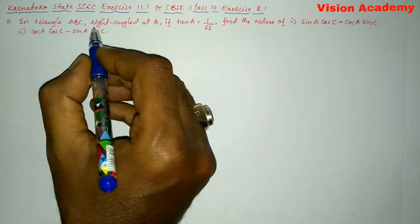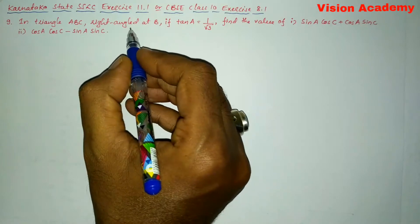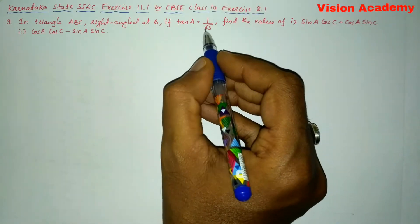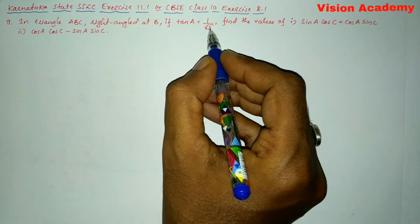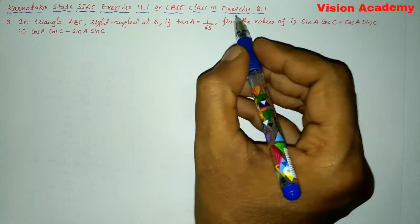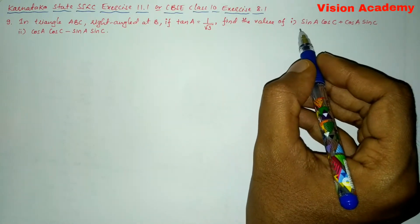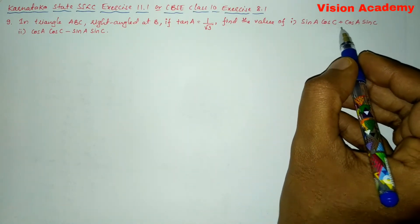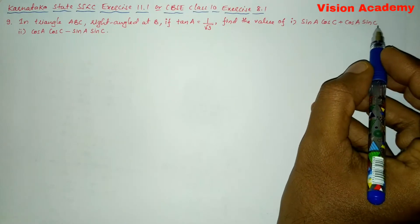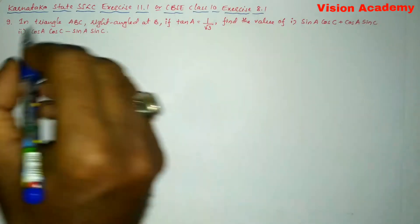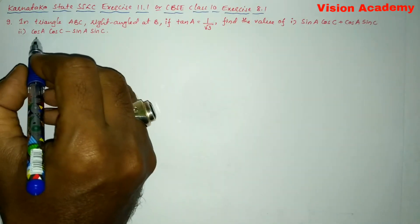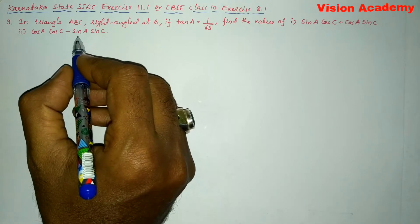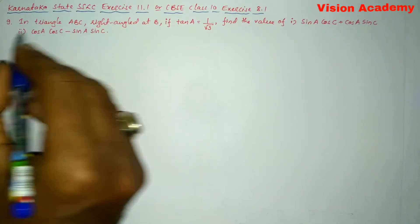In triangle ABC, right angled at B, if tan A is equal to 1 by square root of 3, find the value of: roman number 1 — sin A into cos C plus cos A into sin C; roman number 2 — cos A into cos C minus sin A into sin C.